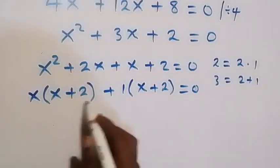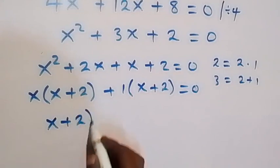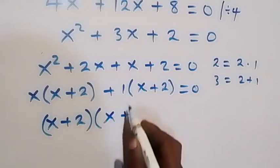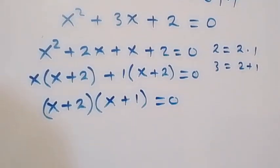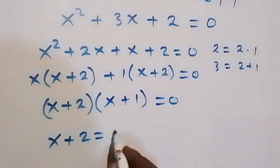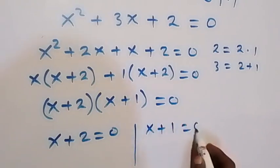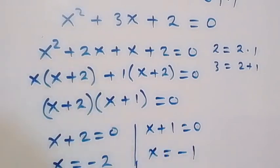Taking (x plus 2) as the common factor gives (x plus 2)(x plus 1) equals 0. This means either x plus 2 equals 0, giving x equals negative 2, or x plus 1 equals 0, giving x equals negative 1. Now, which of these two solutions satisfies the original equation?